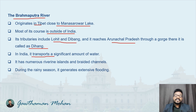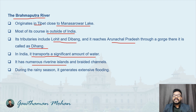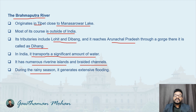In India, the Brahmaputra transports a huge amount of water. It has numerous riverine islands and braided channels — it actually creates islands along its course. During the rainy season, it generates extensive flooding, causing significant floods in the northeastern regions.